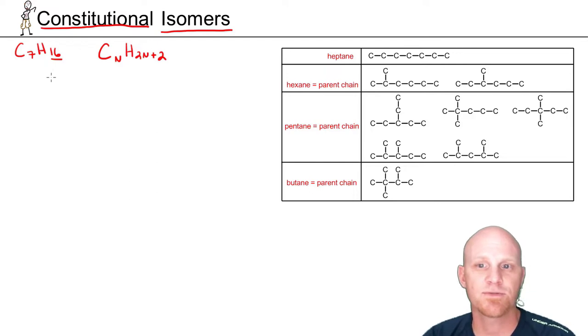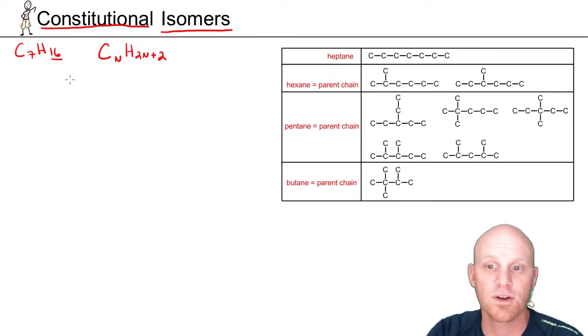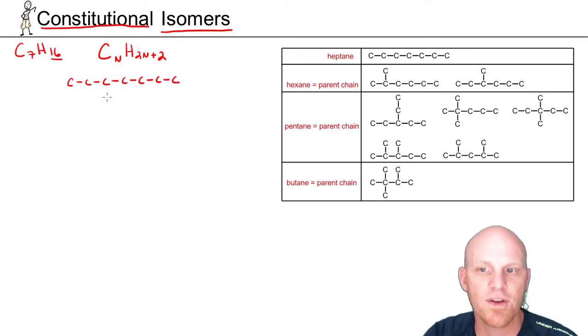So let's draw the constitutional isomers for heptane here, C7H16. And in this case, we're just going to start looking at this from a straight seven carbon chain. And I highly recommend, especially at this stage of the game, instead of looking at line angle formulas, we're going to kind of look at these modified Lewis structures and just draw out explicitly all the carbons. So one, two, three, four, five, six, and seven, and that's heptane.